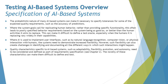Challenge number three: the probabilistic nature of many AI-based systems makes it necessary to specify tolerances for some expected quality requirements, such as accuracy of prediction. We cannot always talk about very specific predictions in terms of being accurate. We look forward to having a tolerance range — the output can be slightly less or slightly more, precise in some cases and slightly deviating in others — and we simply have to agree to that.